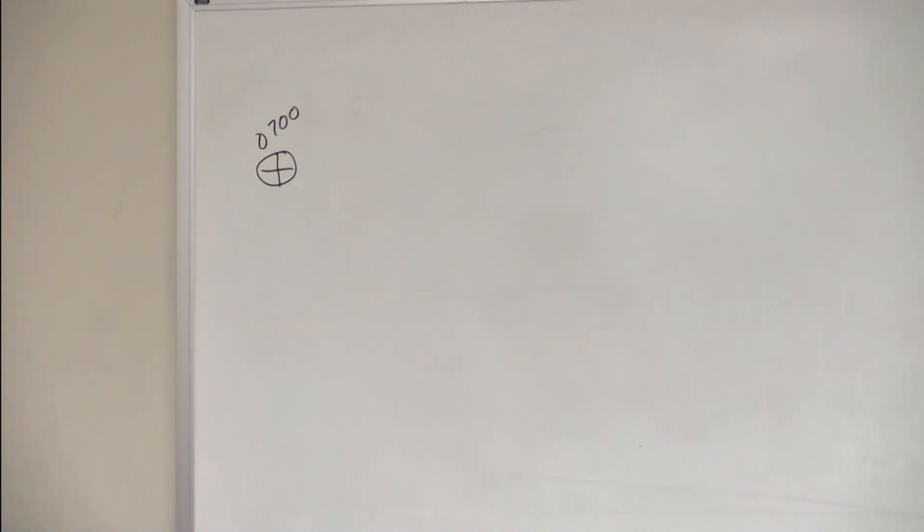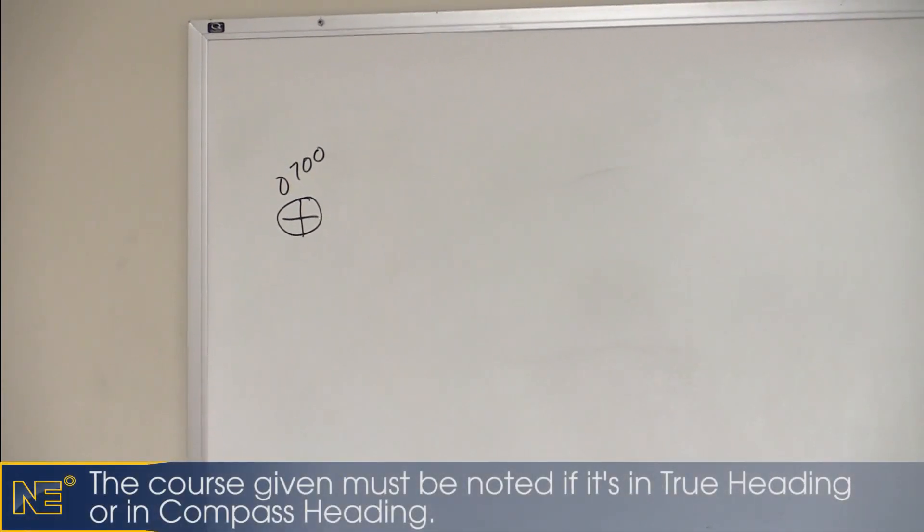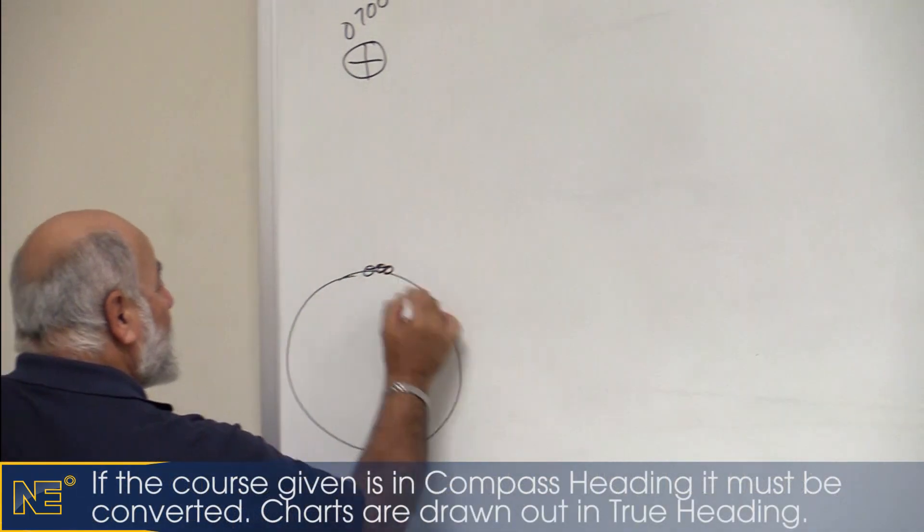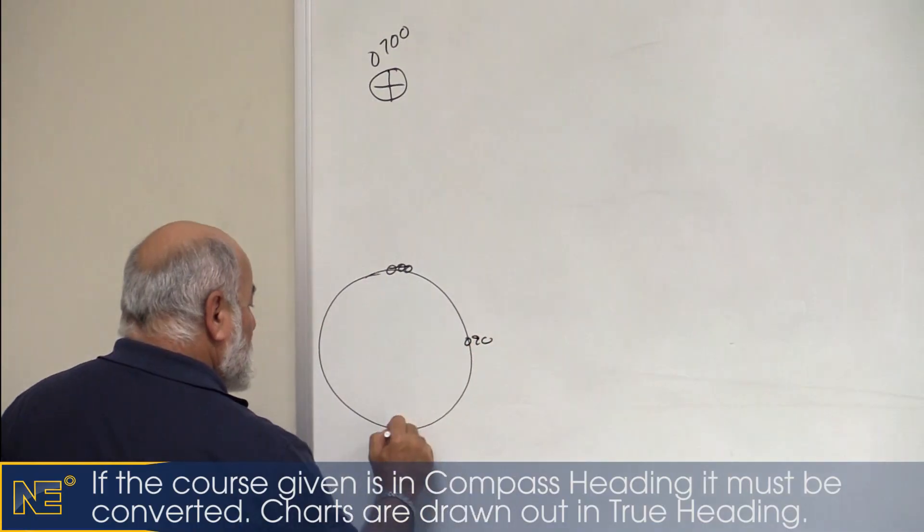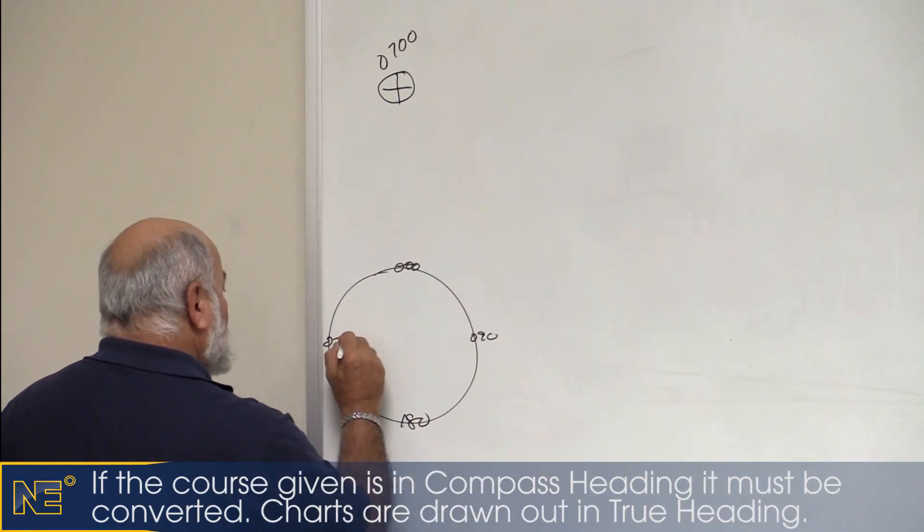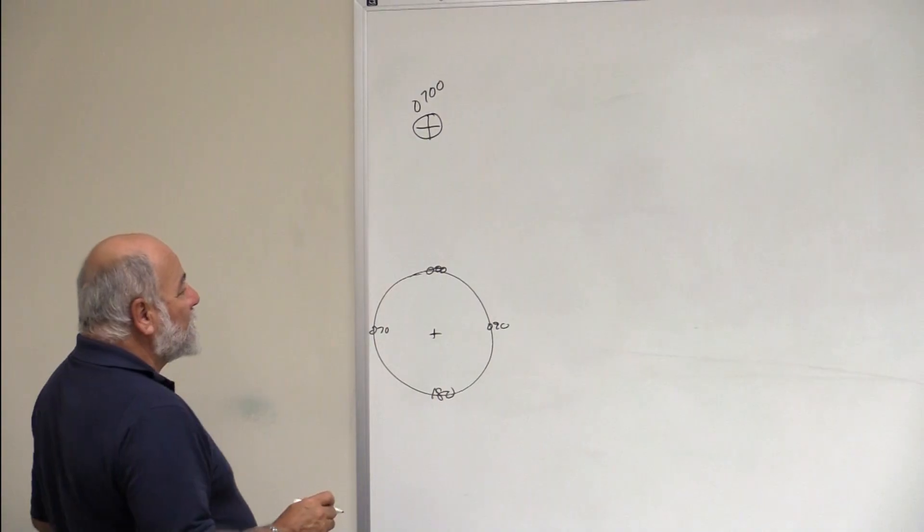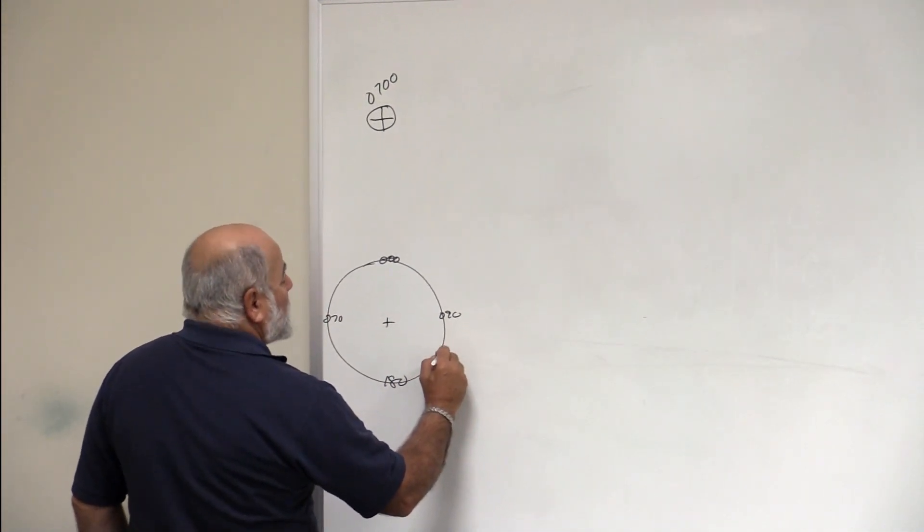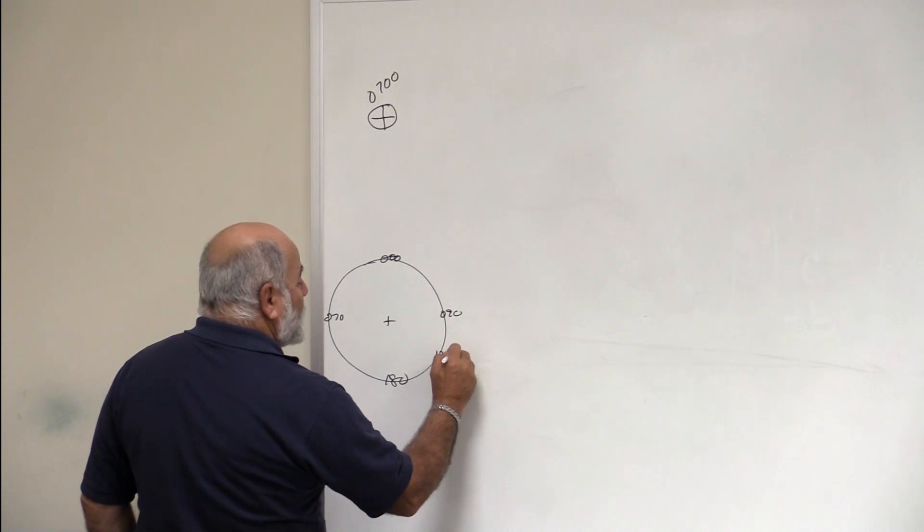If they give you a course in compass, what we need to do is convert it to true. If they give you a true course, we merely draw it on the chart. So for the sake of discussion, this is our compass rose, and we're going to say that we were given a course of 135 degrees true.